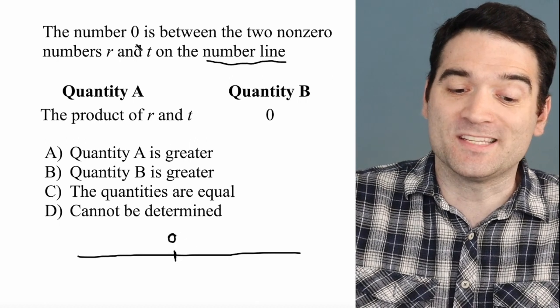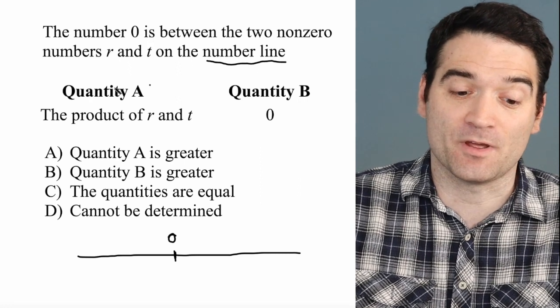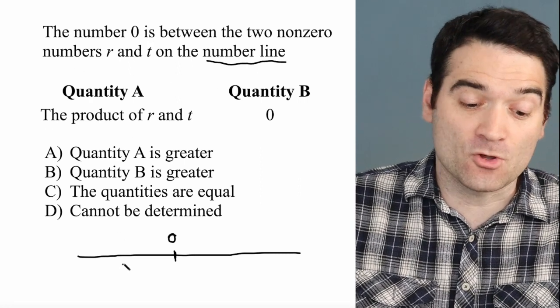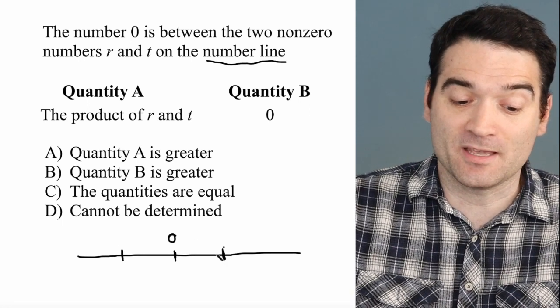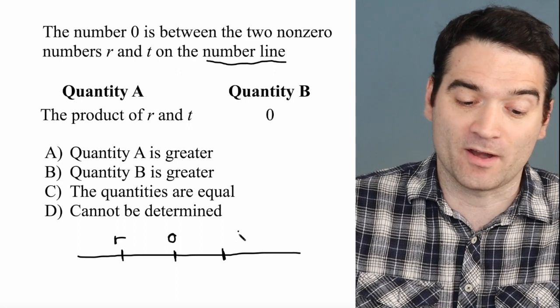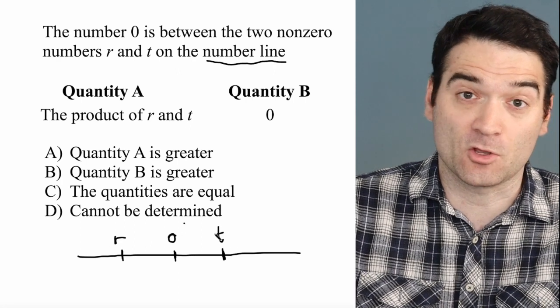We're told that 0 is between these non-zero numbers R and T. So it could go either way. It could be R right here and T right there, or T right there and R right there. I'm just going to write R and T there, but just know that it could be reversed.